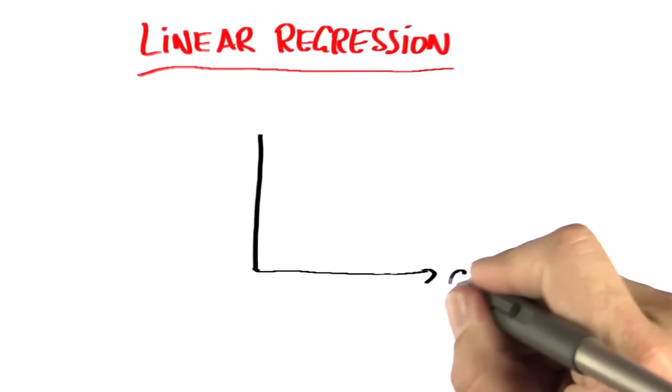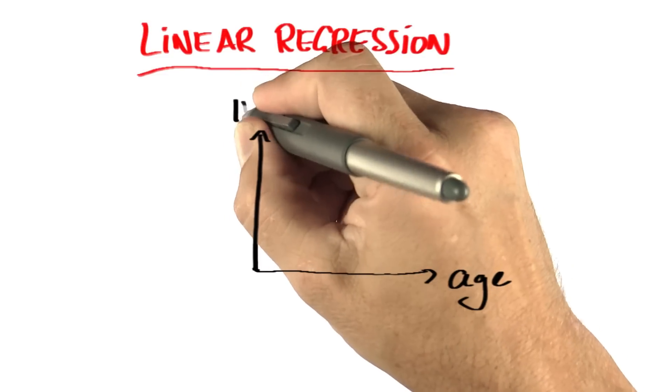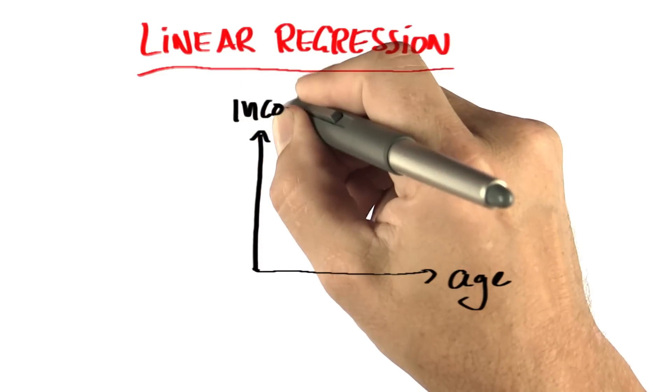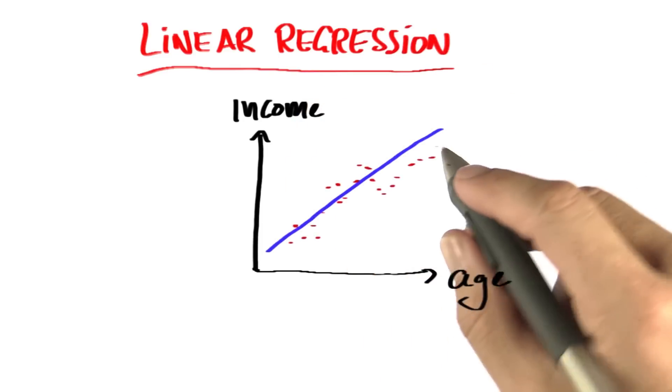If I have two dimensional data, such as the age of a person and the person's income, and this is obviously made up data, then linear regression tries to fit a line that best describes the data.